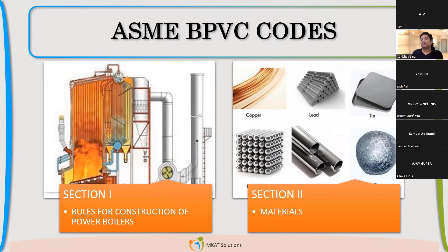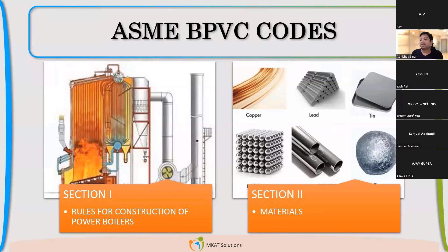In summary: Section 5 covers how to perform the NDE examination. Whether to accept the result or not is governed by the specific design code, because when you do welding there will be defects, and they may be acceptable up to a limit. If defects are larger — for example, a cluster of defects exceeding a certain size — that is governed by the design code's acceptance criteria.